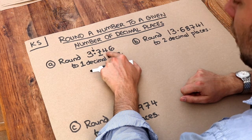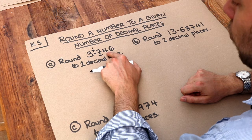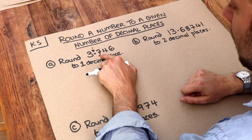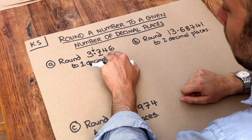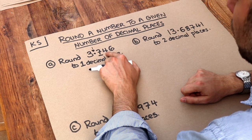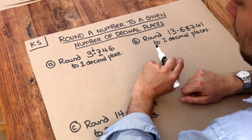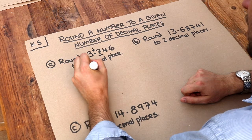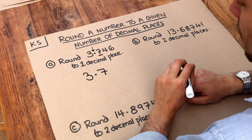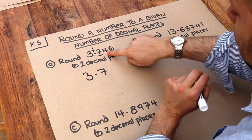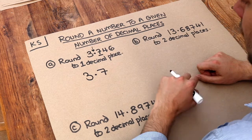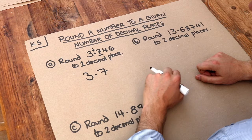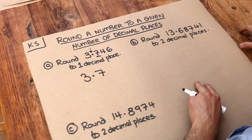Is this digit 5 or more? If yes, that's going to round up and become an 8. But if this is not 5 or more, then that stays as 7. So the answer is 3.7. It rounds down rather than up because of that 4. Note that we indeed have one digit left after the decimal point, so we've rounded it to one decimal place.